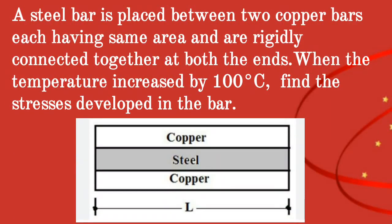Given question: a steel bar is placed between two copper bars, each having the same cross-sectional area, and are rigidly connected together at both ends. When the temperature is increased by 100 degrees Celsius, find the stresses developed in the bars.